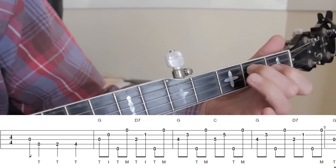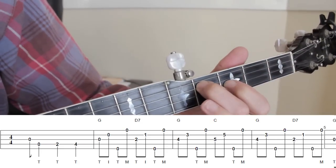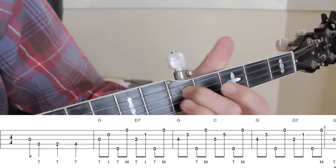For the third bar this shape is moved up the neck to the third and fourth frets of the B and G strings respectively, while the roll is played for the first half of the bar.